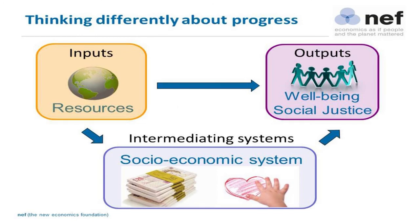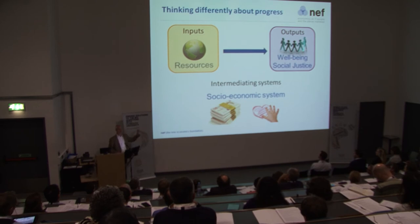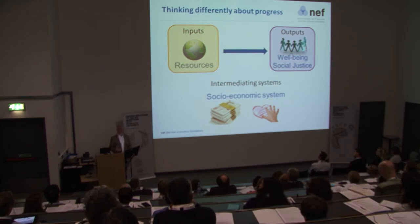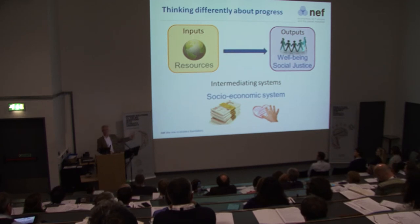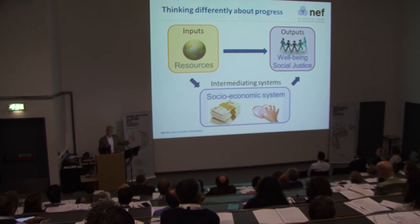This is how we like to think about it: we've got inputs, we've got resources, we've only got one planet. What we're after — growth in what, you might ask — is human well-being; social justice is pretty important to the outcomes we're looking for in society. The economy is an intermediating system — a socio-economic system — and you can't really tease apart the social and economic parts. We've got markets, things that are priced and marketized, and a whole lot of activity that isn't priced — unpaid labor, which tends to be carried out by women around the world. We call that the core economy, because it generates wealth that is not marketized.